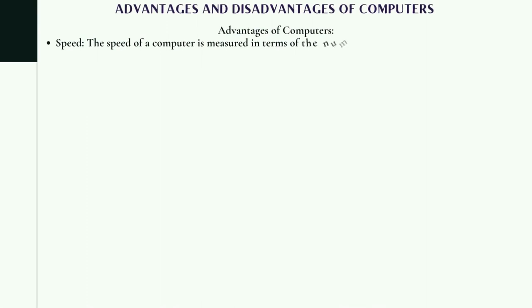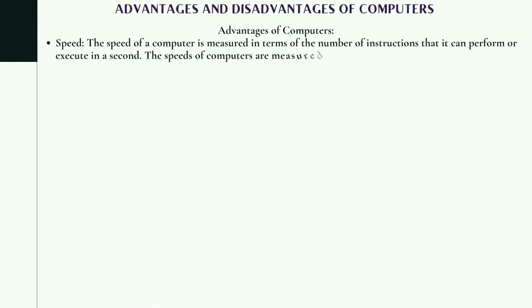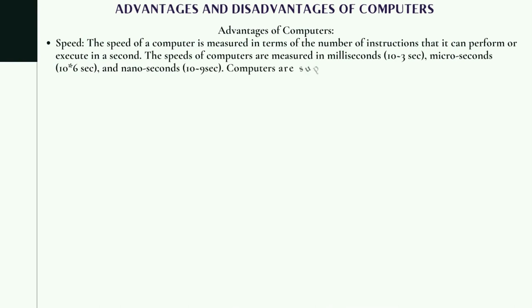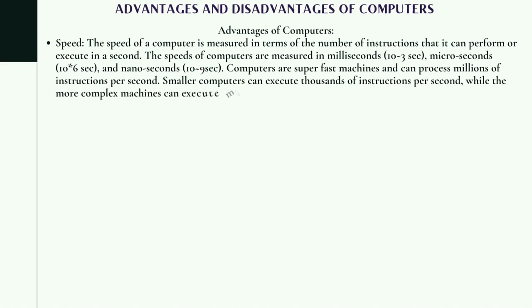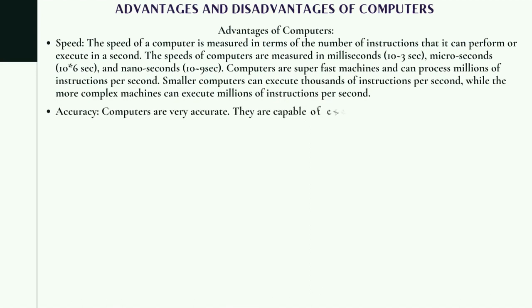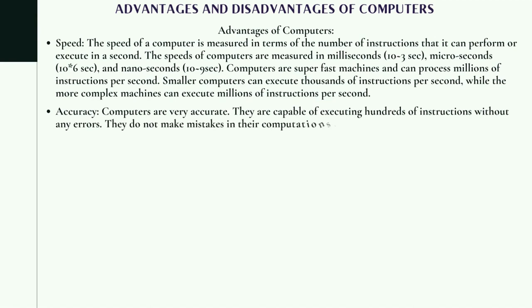Advantages of Computers. Speed: The speed of a computer is measured in terms of the number of instructions that it can perform or execute in a second. The speeds of computers are measured in milliseconds (10⁻³ seconds), microseconds (10⁻⁶ seconds), and nanoseconds (10⁻⁹ seconds). Computers are super-fast machines and can process millions of instructions per second. Smaller computers can execute thousands of instructions per second, while the more complex machines can execute millions of instructions per second.